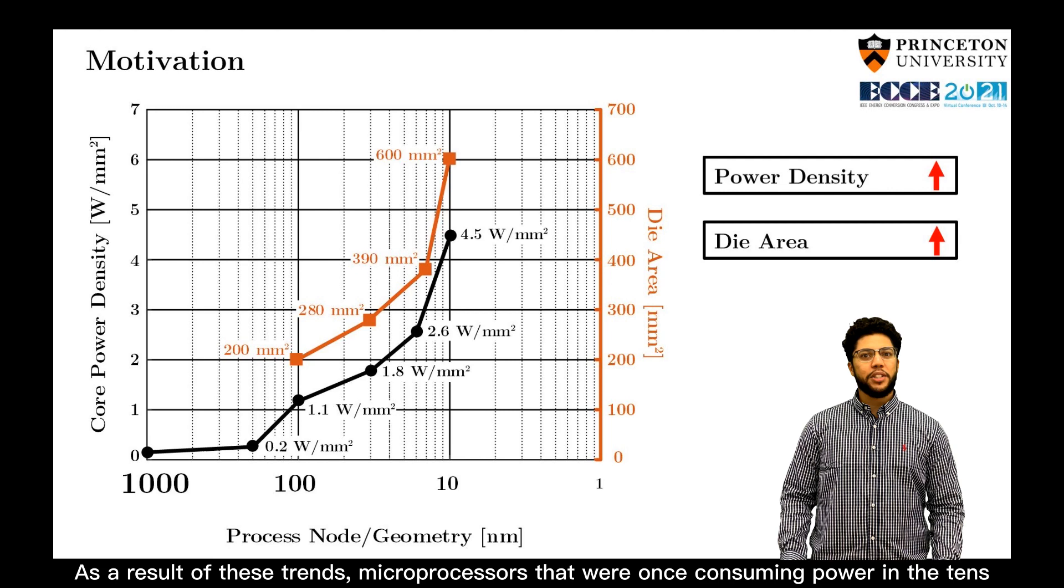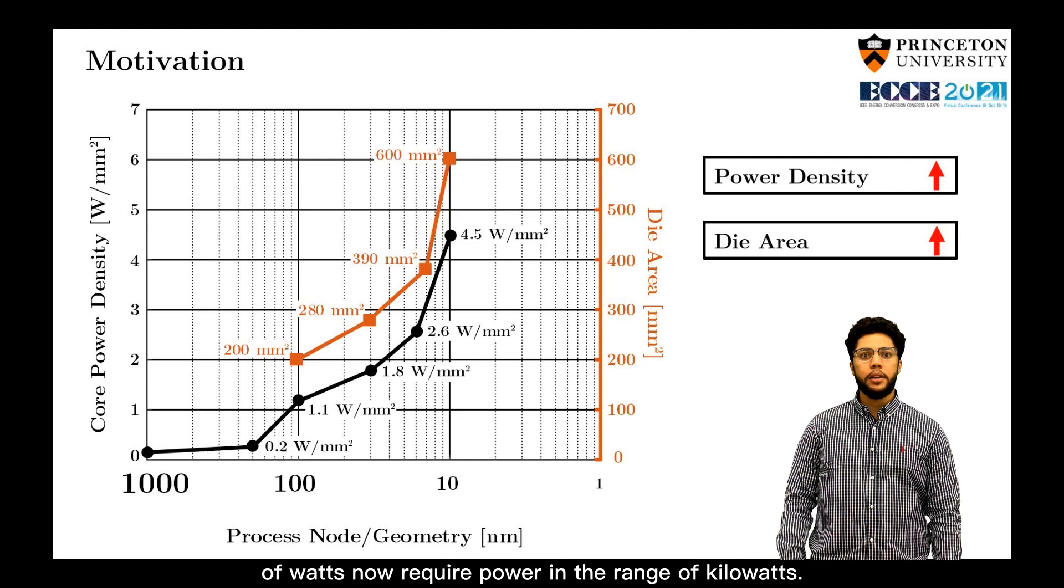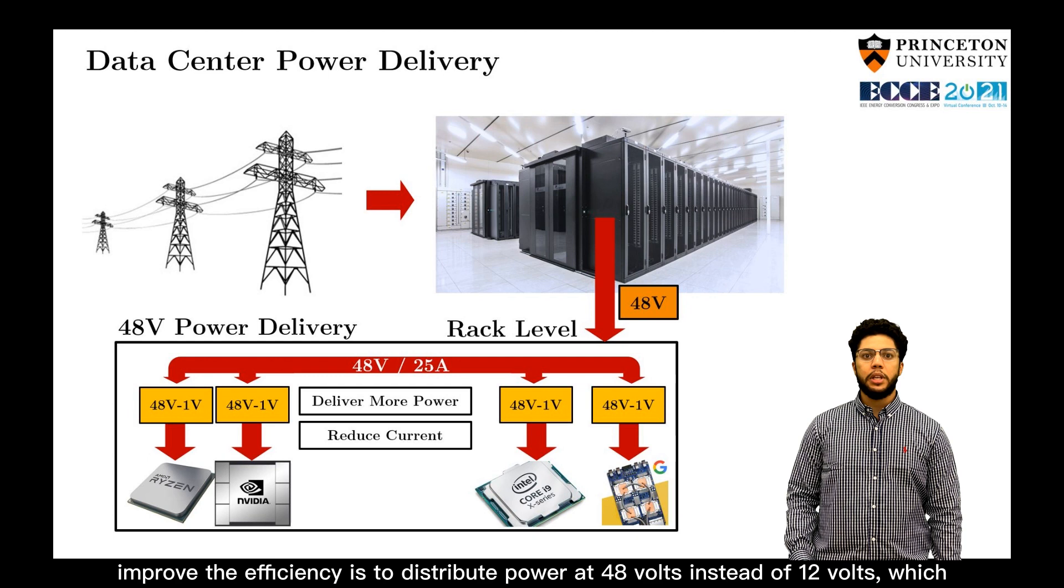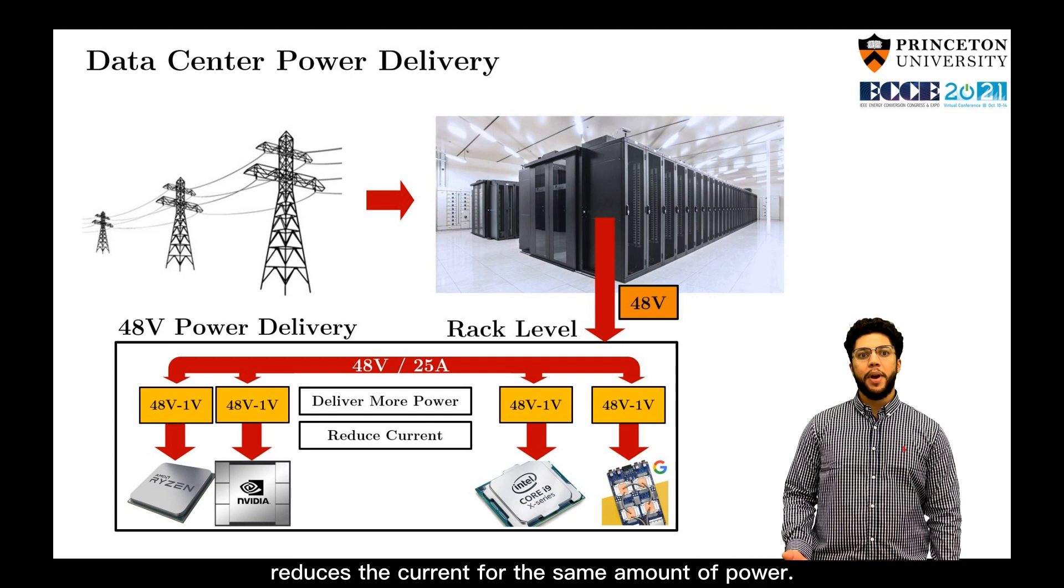As a result of these trends, microprocessors that were once consuming power in the tens of watts now require power in the range of kilowatts. An emerging trend to increase the amount of power delivered into data centers and improve the efficiency is to distribute power at 48 volts instead of 12 volts, which reduces the current for the same amount of power.